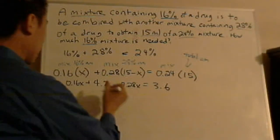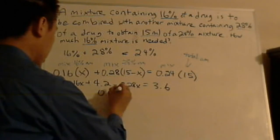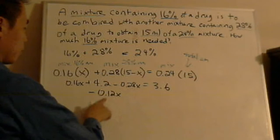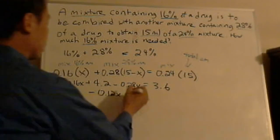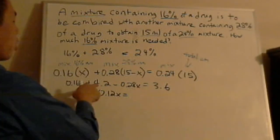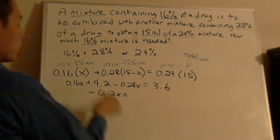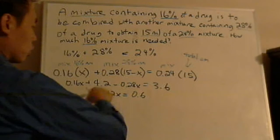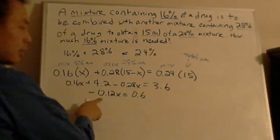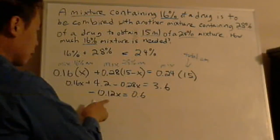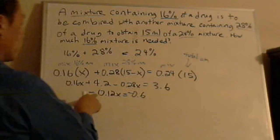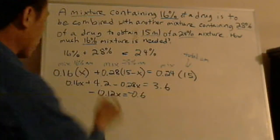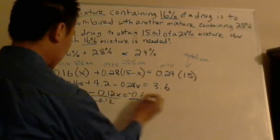So now you have 0.16x plus 4.2 minus 0.28x equals to 3.6. Now let's combine like terms. So you get 0.2x negative—here's 0.16x minus 0.2x is negative 0.12x. And let's move 4.2 over to the other side. So I subtract 4.2 here. And you get 0.6. Subtract 4.2 on both sides. So now I get negative 0.12x. Negative 0.12x equals to negative 0.6. So now we divide by negative 0.12.